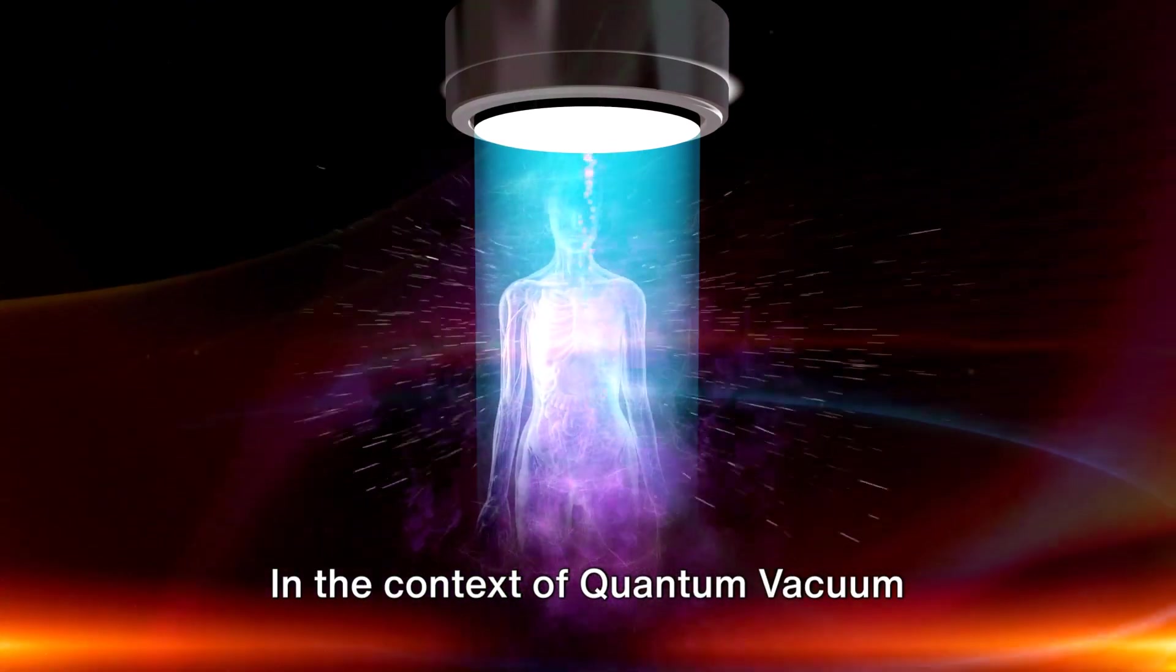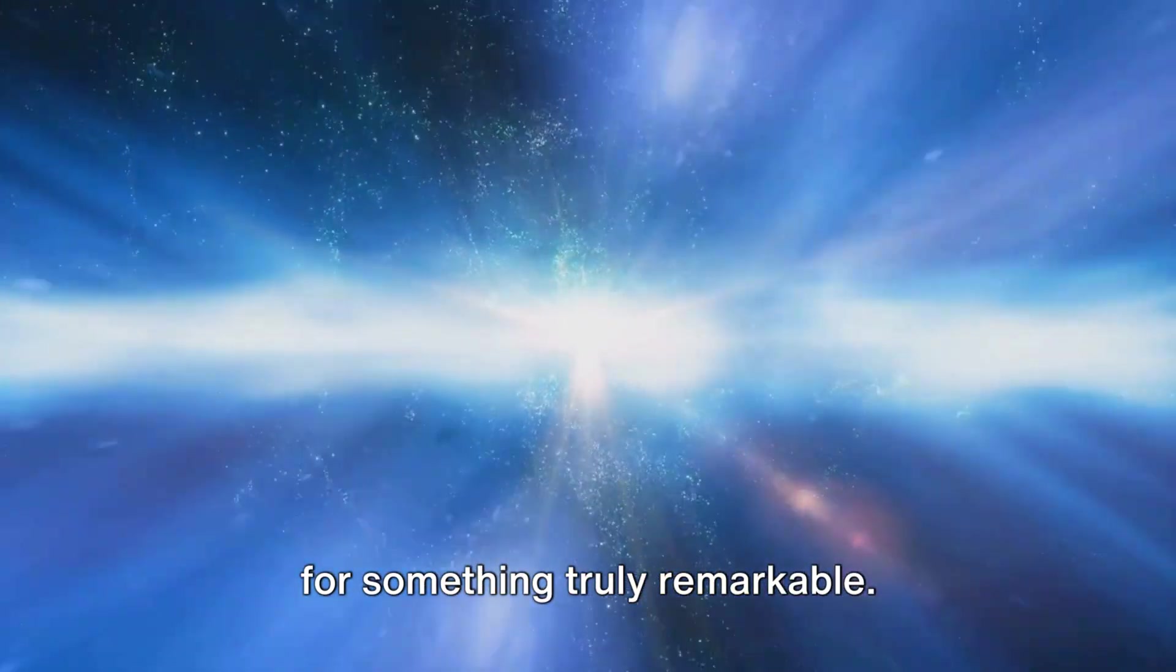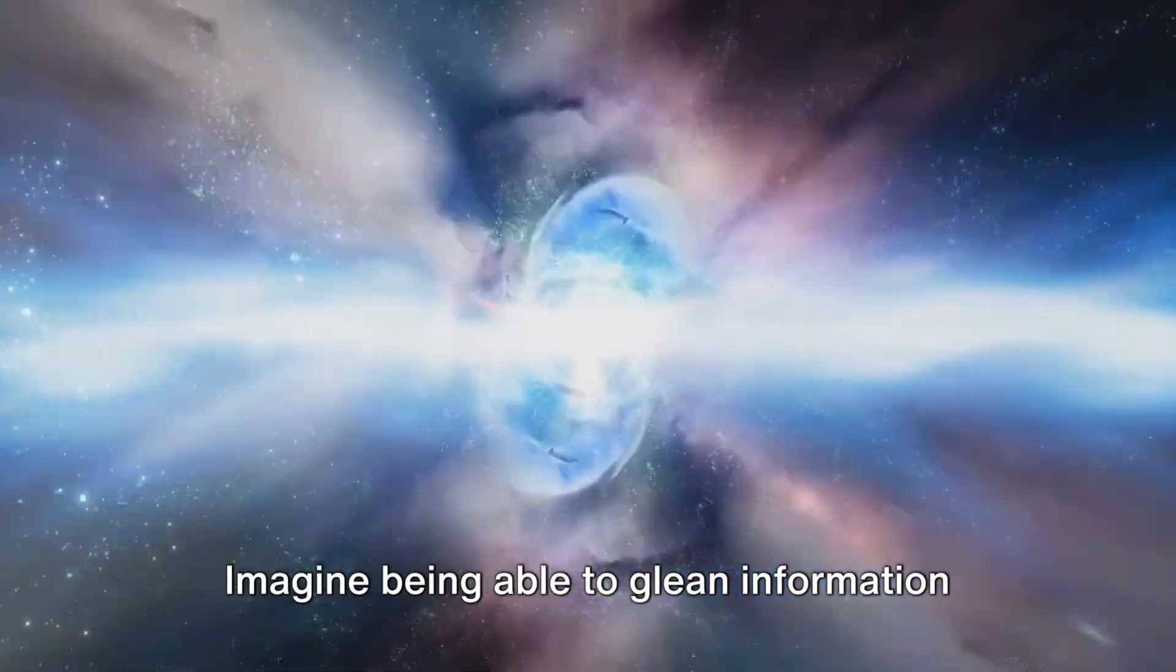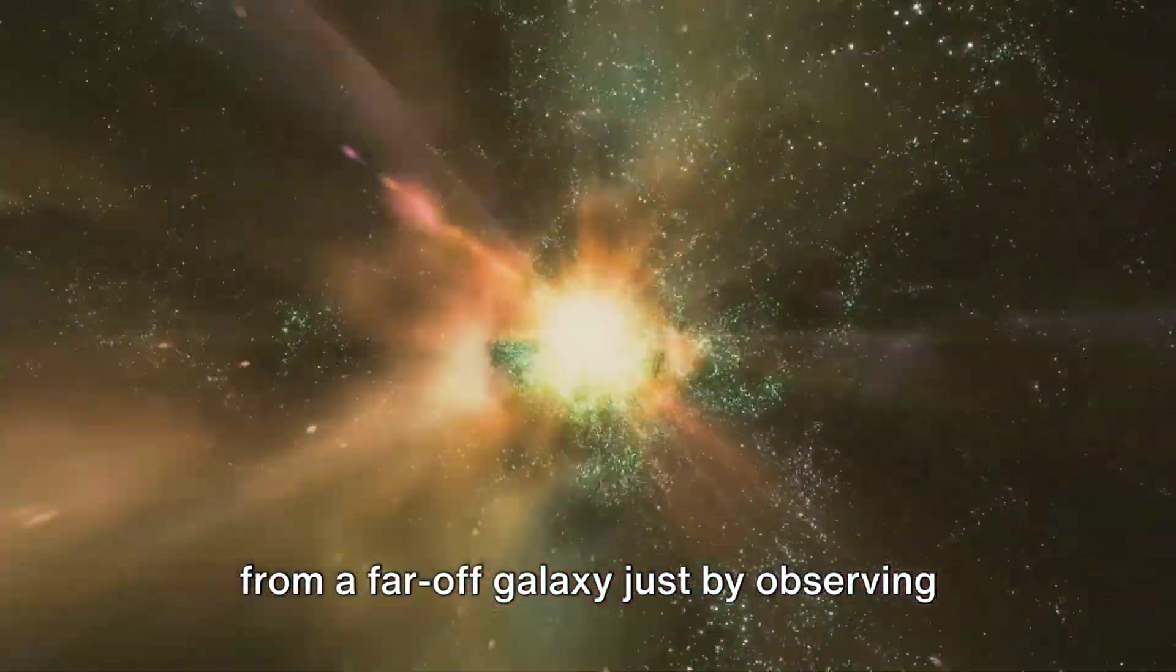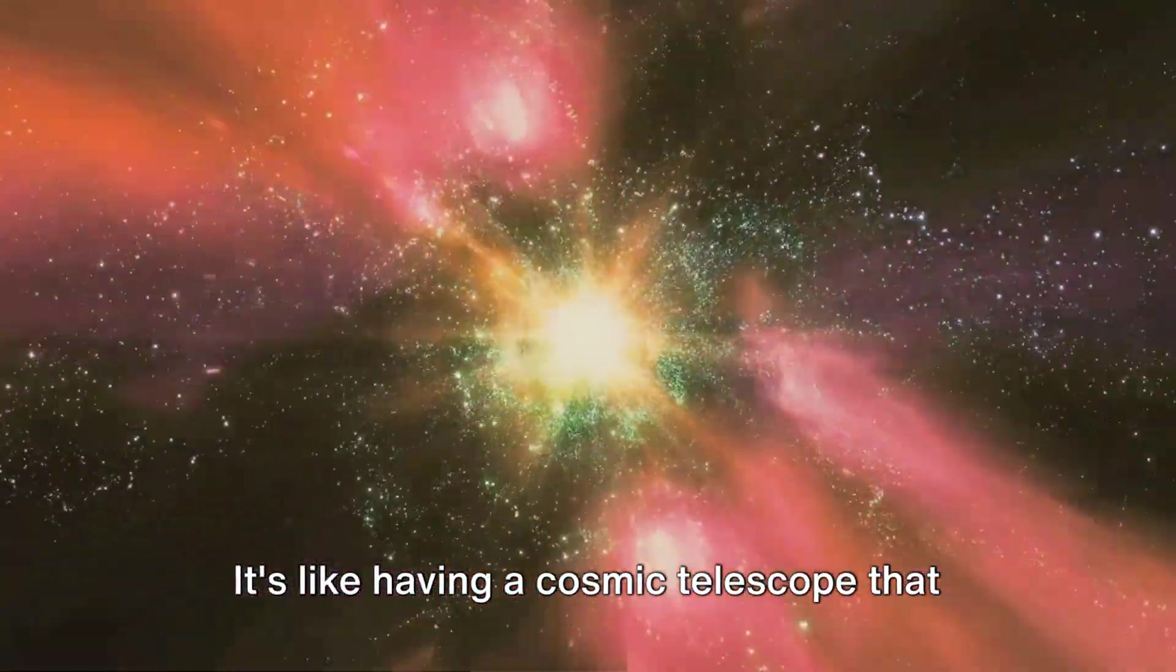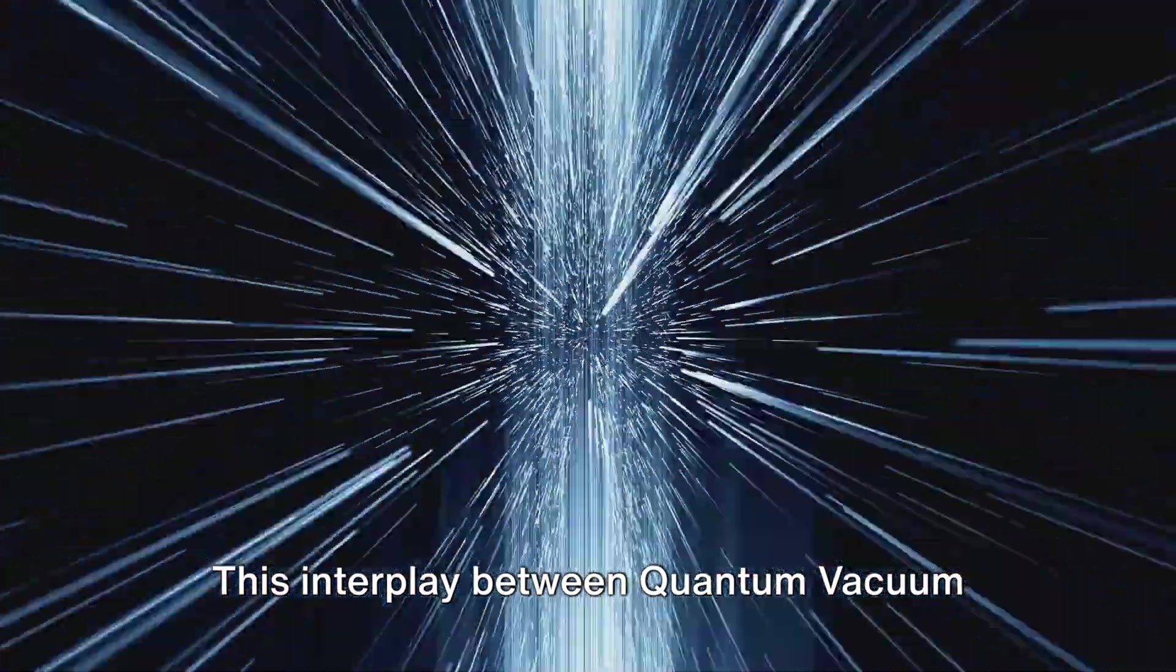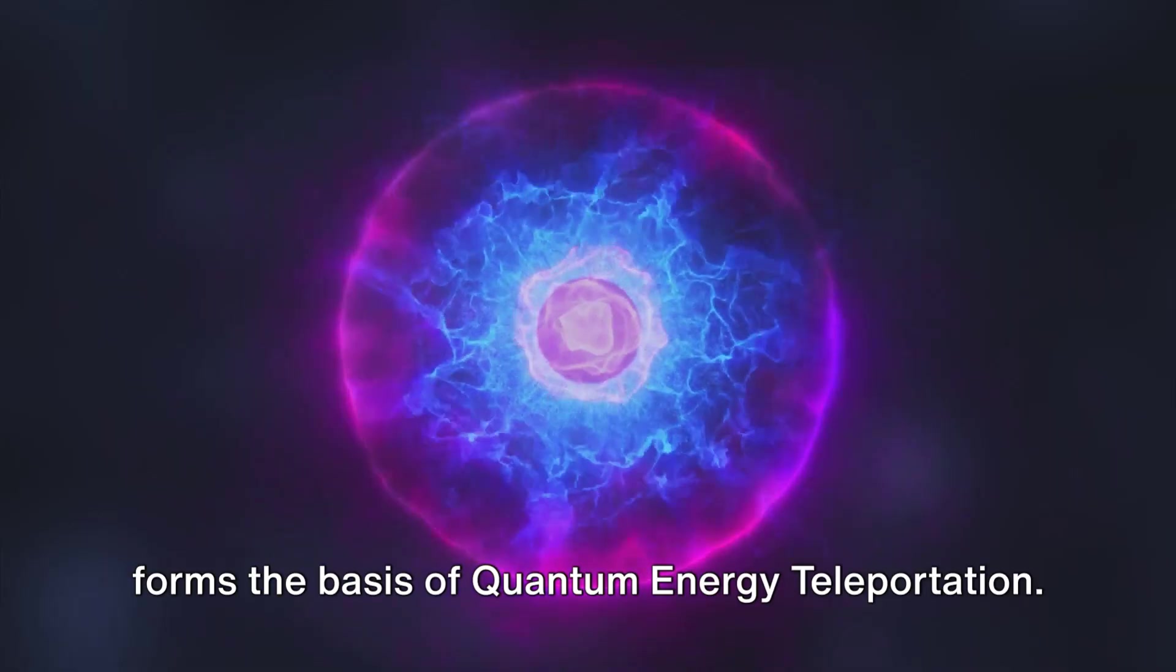In the context of quantum vacuum fluctuations, spatial entanglement allows for something truly remarkable. It enables an observer to gain information about local fluctuations around a distant observer. Imagine being able to glean information from a far-off galaxy, just by observing the quantum dance happening in your own backyard. It's like having a cosmic telescope that can peer into the deepest corners of the universe.